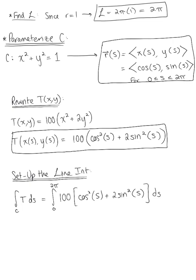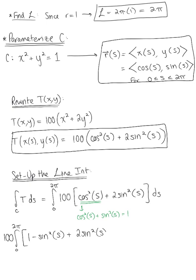Looking at the integrand, we can't integrate as written, so we'll use trig identities. From the Pythagorean identity, cosine squared of s plus sine squared of s equals 1, so we solve for cosine squared and rewrite. This becomes 100 times the integral from 0 to 2π of 1 minus sine squared of s plus 2 sine squared of s ds, which combines to 100 times the integral from 0 to 2π of 1 plus sine squared of s ds.